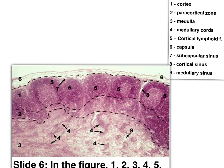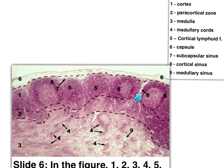Again: number 1 is the cortex, number 2 the paracortex or thymus-dependent zone, number 3 the medulla, number 4 the medullary cords, number 5 the cortical follicles, number 6 the capsule, number 7 the white area which is the subcapsular sinus, number 8 the trabecular sinus or cortical sinus, and number 9 is the area in between the cords — the medullary sinus.